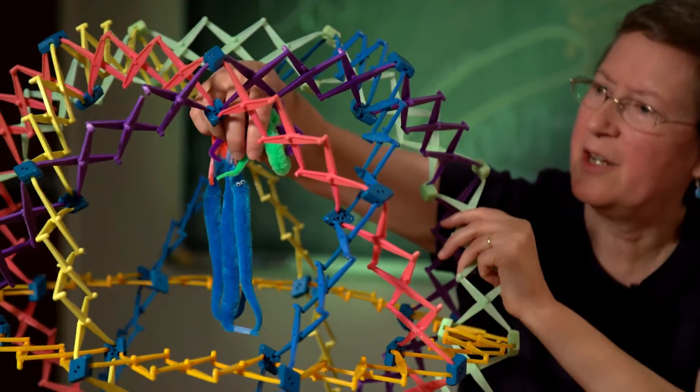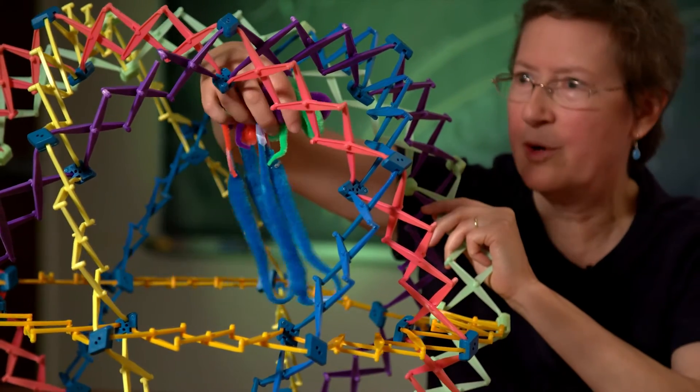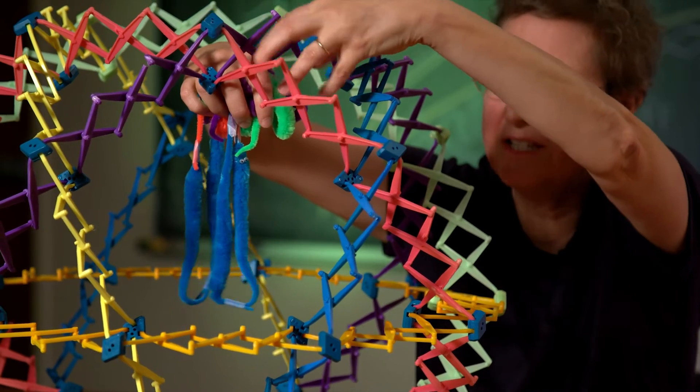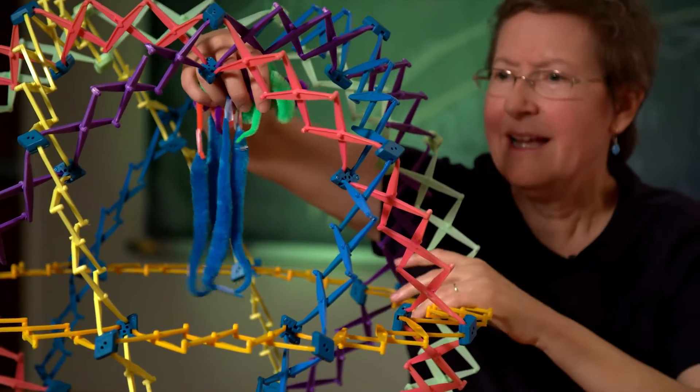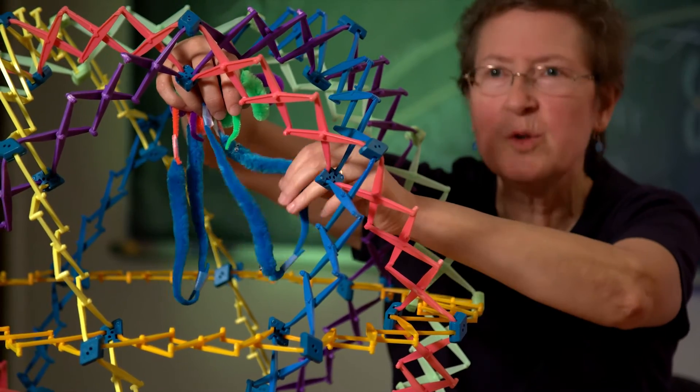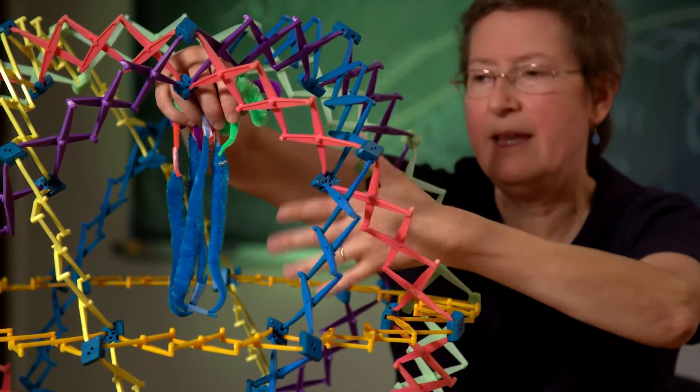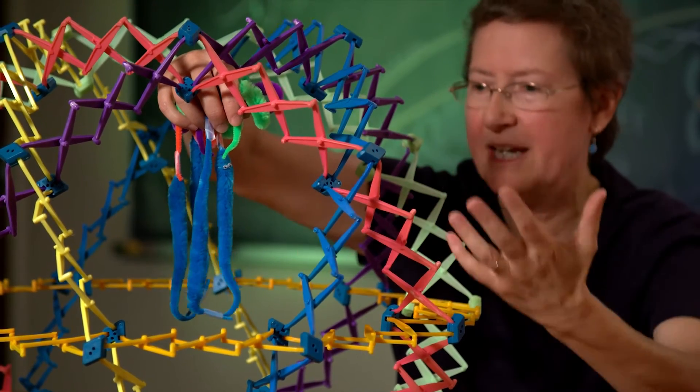So now the genes that are off are all associating with the lamin network and with the membrane proteins that you can't see here. And the genes, the fuzzy worms that are dangling down, they're loose and accessible. These are the genes that can be turned on and they code for RNA that makes proteins.